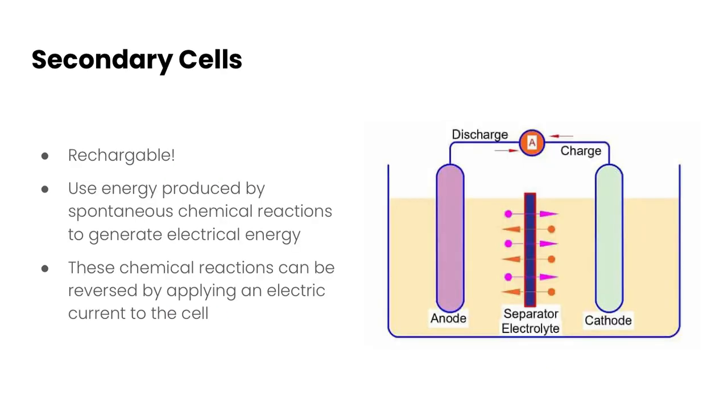So that brings us to secondary cells. Secondary cells are great because they are rechargeable. That means what we can do is we can use the energy produced by spontaneous chemical reactions to generate electrical energy and then those reactions can be reversed by applying an electric current to the cell. And so you can satisfy that higher current demand over primary cells but it's important to note that because of that they have a higher rate of self discharge.